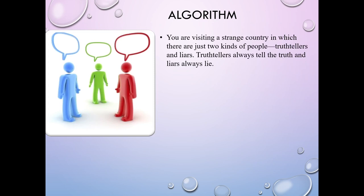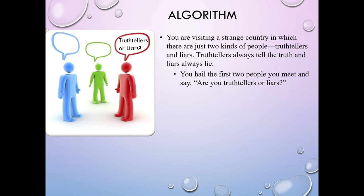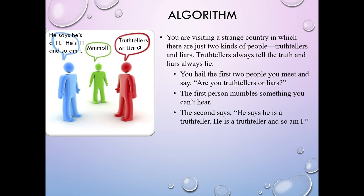Let me give you another problem that can only be solved using an algorithm. You're visiting a strange country where there are just two kinds of people: truth tellers, who always tell the truth, and liars, who always lie. You hail the first two people you meet and ask, 'Are you truth tellers or liars?' The first person mumbles something you can't hear. The second person says, 'He says he is a truth teller. He is a truth teller and so am I.' Can you trust the directions these two may give you? There is enough information here — if you solve this algorithmically, there's more than enough to answer the question.